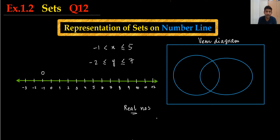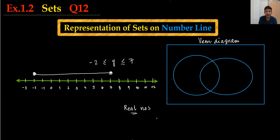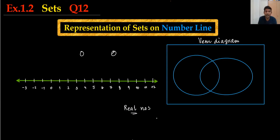Moving to the next part: Y is greater than or equal to minus 2. I will draw a circle at minus 2 and fill it because it includes equals. And at 7, I will draw a circle and fill it as well. I shade the range between them — these are all the values in this set for part 4. So the rule is: we need either an open circle or a filled circle depending on whether the endpoint is included.